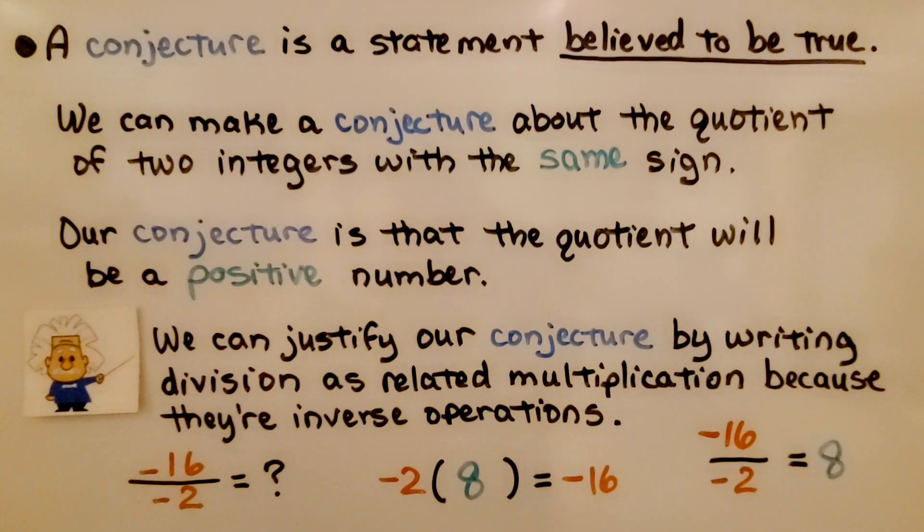A conjecture is a statement believed to be true. We can make a conjecture about the quotient of two integers with the same sign. Our conjecture is that the quotient will be a positive number. And we can justify our conjecture by writing division as related multiplication because they're inverse operations. If they have the same sign, like negative 16 divided by negative 2, we can write a related multiplication sentence as negative 2 times some number is equal to negative 16. That would be a positive 8 for them to have unlike signs to equal a negative. These have like signs. We're going to have a positive quotient. Negative 16 divided by negative 2 is equal to positive 8.